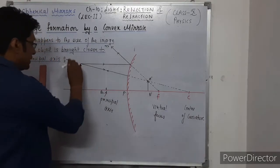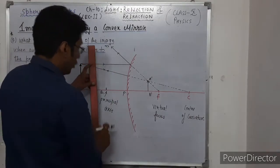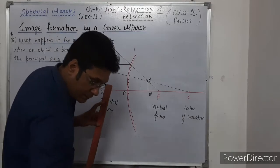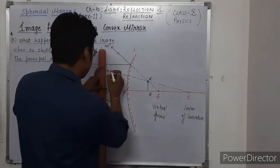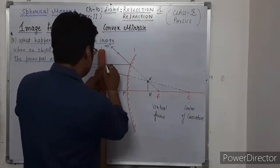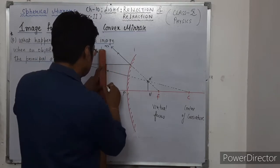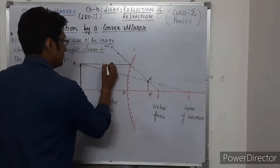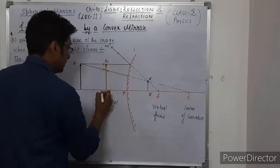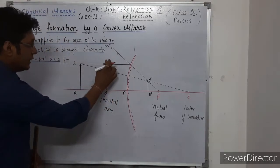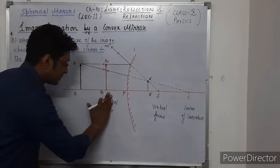Now we bring AB closer to the convex mirror. The object is now at this new point. This is the new object position A1, B1. This is the principal axis.